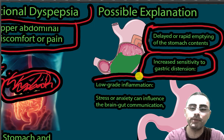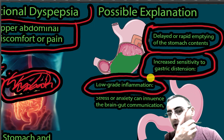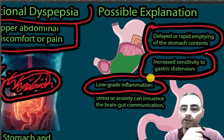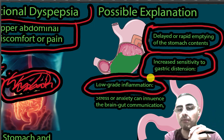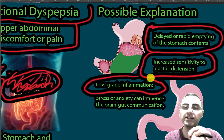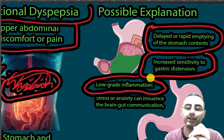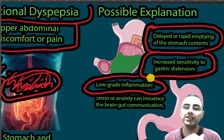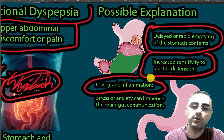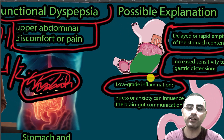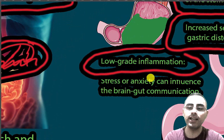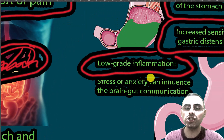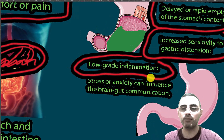Another possible explanation is low-grade inflammation. For example, a person may have a Helicobacter pylori infection where the inflammation is so microscopic that it cannot be diagnosed by endoscopy — not yet a peptic ulcer or gastritis, but low-grade inflammation that can cause functional dyspepsia. Stress and anxiety can also alter brain-gut communication and exacerbate pain.